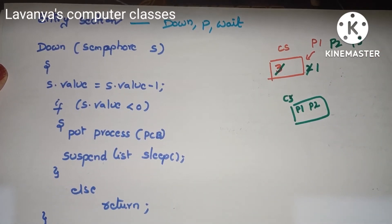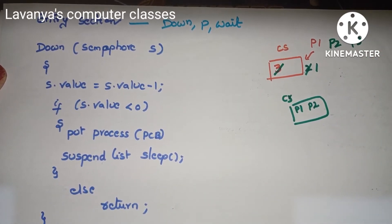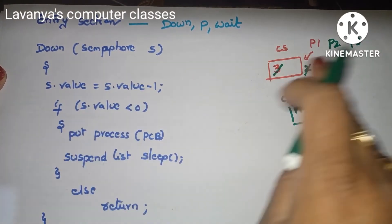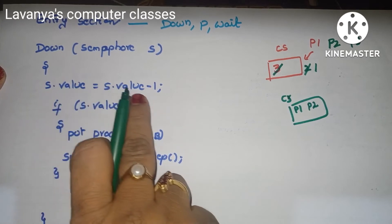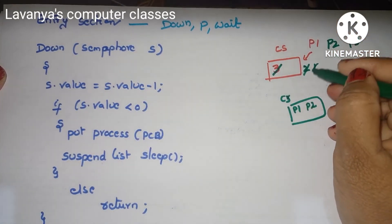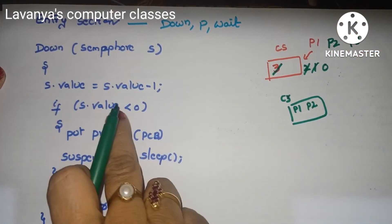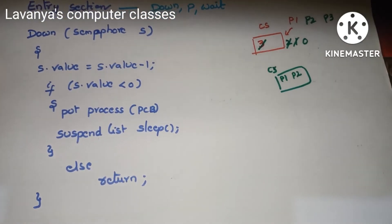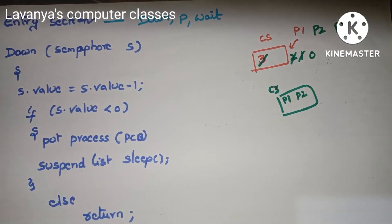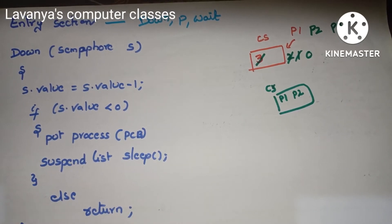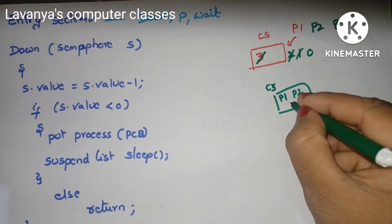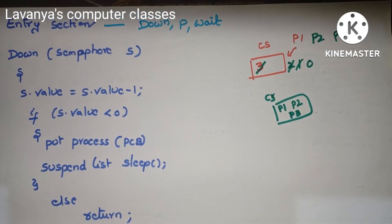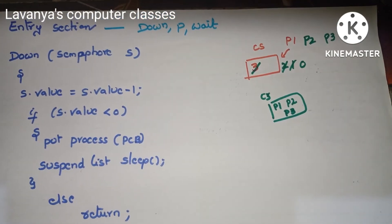P3 also wants to enter the critical section. Following the down algorithm: S value 1 minus 1 equals 0. Is 0 less than 0? No, 0 equals 0, so it also goes to return. P3 is also entered into the critical section.